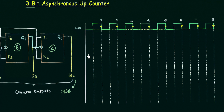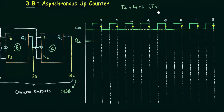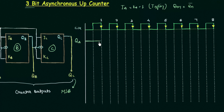Let's start with output QA. Initially QA is 0 and it remains 0 until the first falling edge. Since JA and KA equal 1, we have toggling, where the next state Q(N+1) equals the complement of the present state QN. So at this falling edge the next state will be 1, because the present state is 0 and its complement is 1.